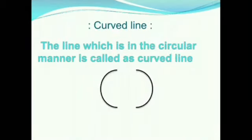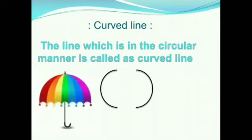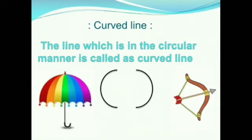Now we will move to curved line. The line which is in a circular manner is called a curved line. When do we use an umbrella? While raining or on hot sunny days? This part of the umbrella has a curved line. You have played with a bow and arrow — this part of the bow has a curve. It is a curved line.